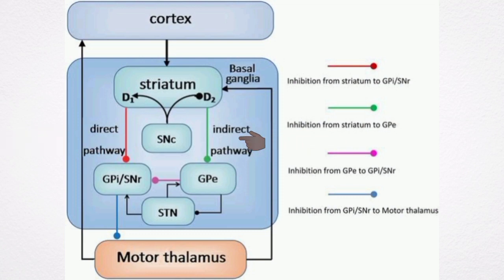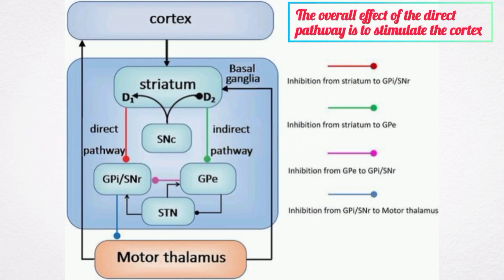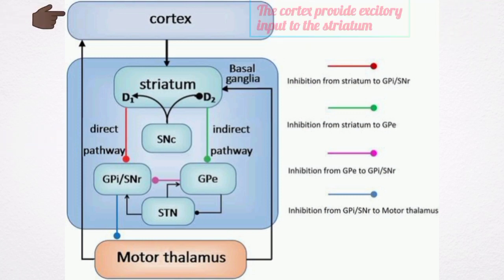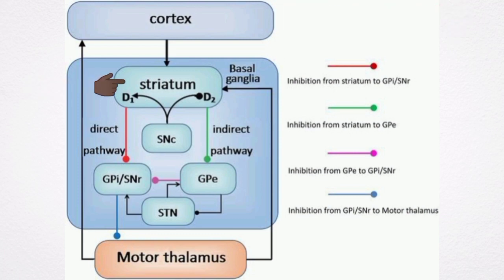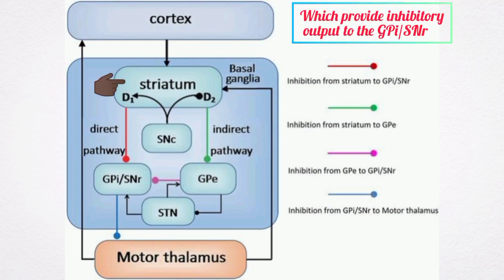The overall effect of the direct pathway is to stimulate the cortex. The cortex provides excitatory inputs to the striatum, which then provides inhibitory outputs directly to the internal globus pallidus and the substantia nigra pars reticularis.